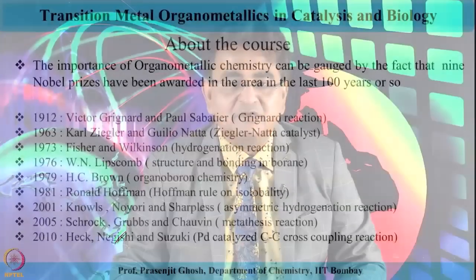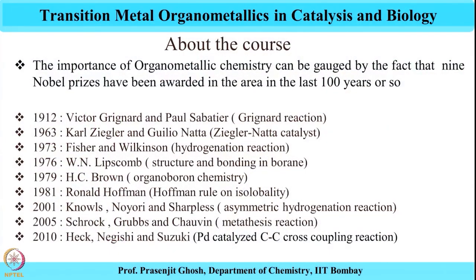In 1981, Professor Roald Hoffmann was given the Nobel Prize for explaining a complex set of rules pertaining to isolobality, where metal fragments behaved chemically similar to their organic counterparts — that is, the reactivity of these metal fragments was very similar to that of their organic counterparts.